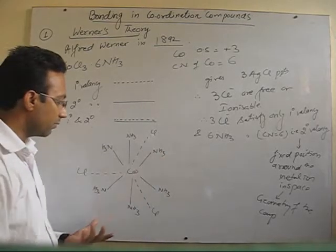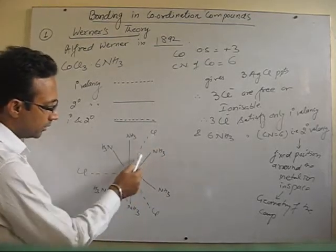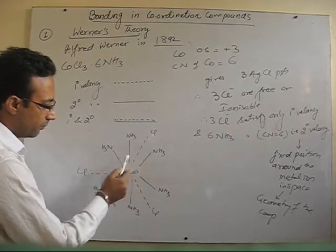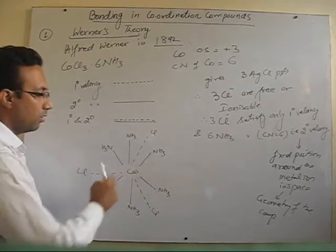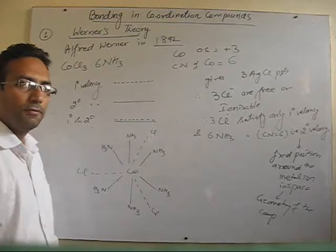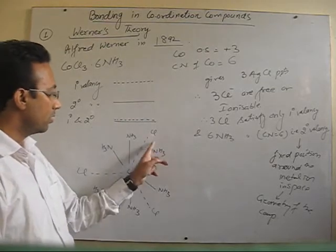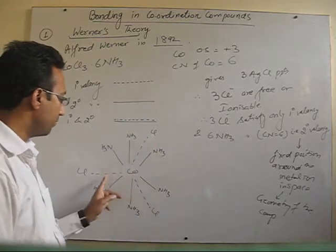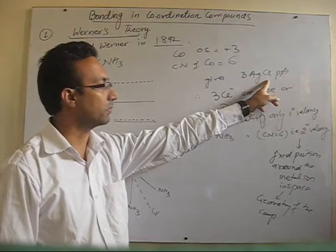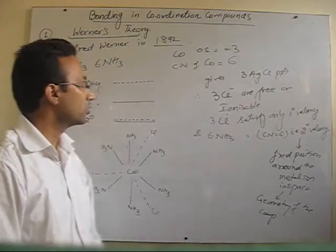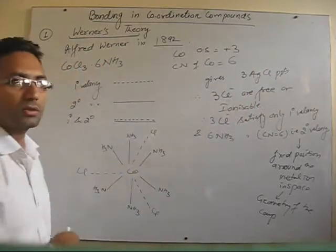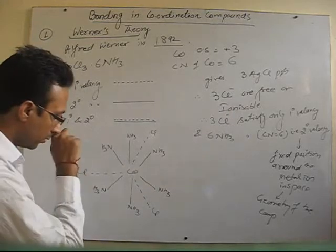You can put them anywhere. When you dissolve this compound in water, all the dotted parts will go free in water, and because 3 Cl are free in water, we get 3 AgCl precipitates. This is how Werner's theory helped in predicting the structure of this compound.